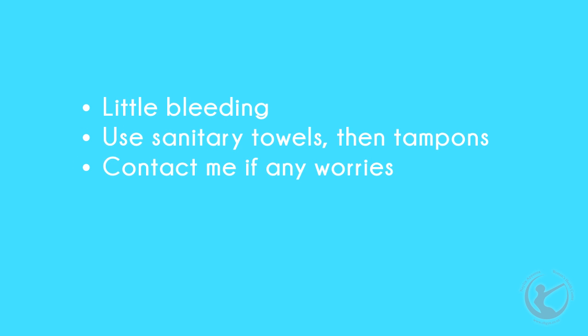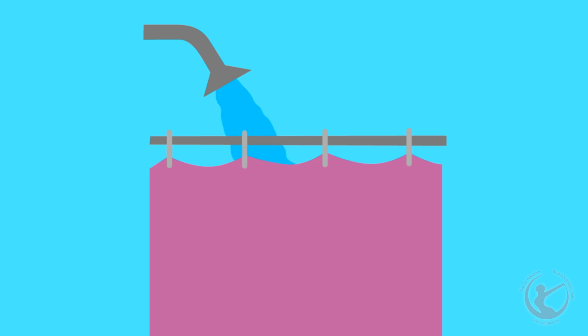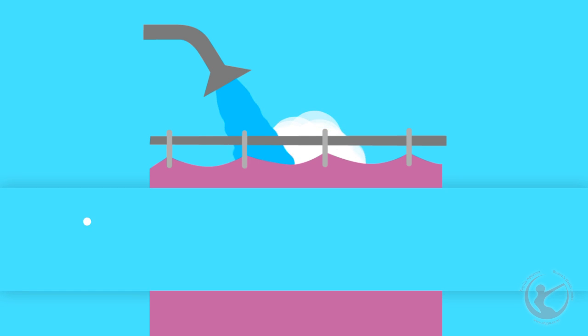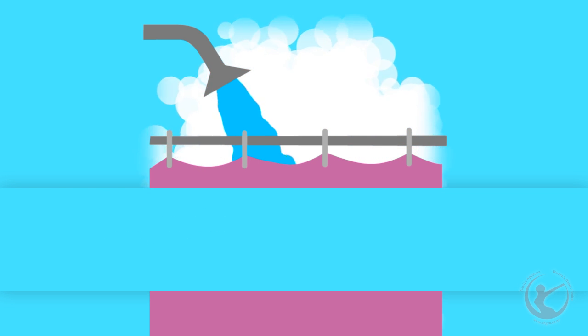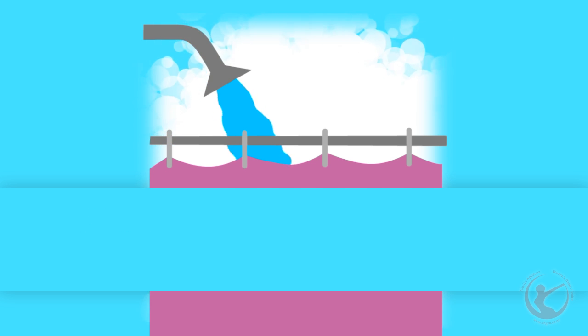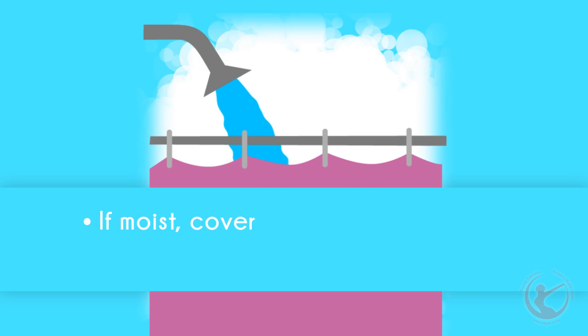If you have heavy bleeding, bad pains, a smelly vaginal discharge or a temperature, you should contact me or your doctor. It is important to prevent any infection after your operation. Good personal hygiene is important. The day after your operation, you should take a bath or shower and remove the plasters on your cuts. Check that the cuts are clean and dry — this will help them heal. Only cover your cuts if they continue to appear moist. Where possible, continue with a daily bath or shower. I also advise that you do not have sexual intercourse for one week, or at least until any bleeding has stopped.